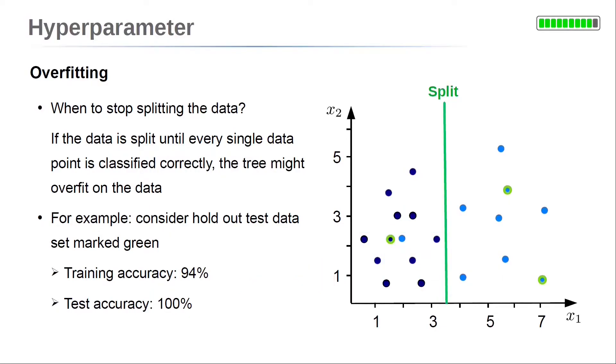A decision tree with a single split at x1 equals 3.5 would give a training accuracy slightly below 100%. The outlier on the left is not classified correctly. But the test accuracy is 100% if we classify according to the most frequent class in the training data. This is a simple example, but it shows that we need to control the conditions for a split to prevent overfitting of a decision tree on the training data.